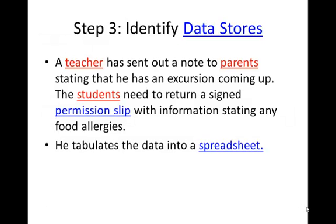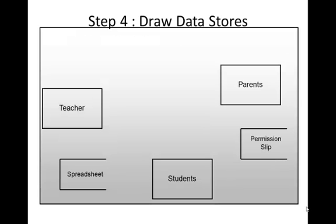Next, I'm going to identify the data stores. There is one data store I've actually neglected here, which is the note to parents, but the permission slip and spreadsheet are good data stores where information is stored. The reason I've left out the note is because all it states is that an excursion is coming up — you could include it, but I've left it out. I'll draw the data stores down the bottom: we've got a spreadsheet and a permission slip.